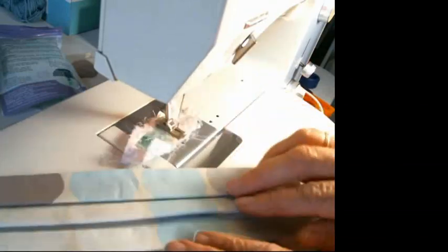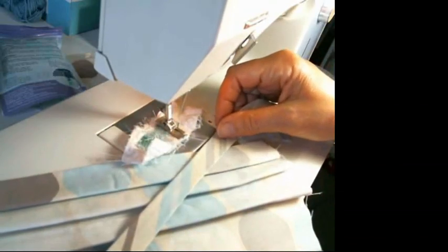Okay, so I'm just going to show you how I attach the binding to the mask. This is the mask, and I've made bias binding in a contrasting fabric.